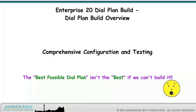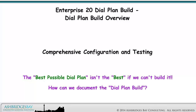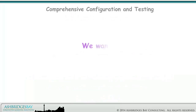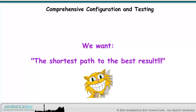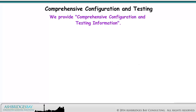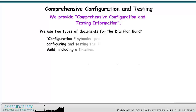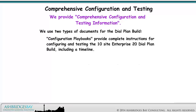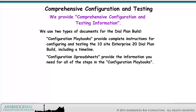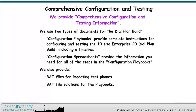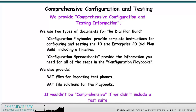The best possible Dial Plan isn't the best if we can't build it. How can we document the Dial Plan build? How do we test it? We use two types of documents for the Dial Plan build. Configuration playbooks provide complete instructions for configuring and testing the 10-site Enterprise 20 Dial Plan build, including a timeline. And configuration spreadsheets provide the information you need for all of the steps in the configuration playbooks. We also provide BAT files for importing test phones, and BAT file solutions for the playbooks. It wouldn't be comprehensive if we didn't include a test suite.